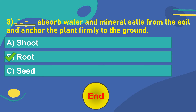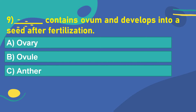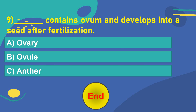Let's move on to the next question. The ninth question is: Dash contains ovum and develops into a seed after fertilization. Option A: Ovary. Option B: Ovule. Option C: Anther. Think of the answer. Your time starts now. 5, 4, 3, 2, 1, 0. OK. The correct answer is Option B: Ovule.